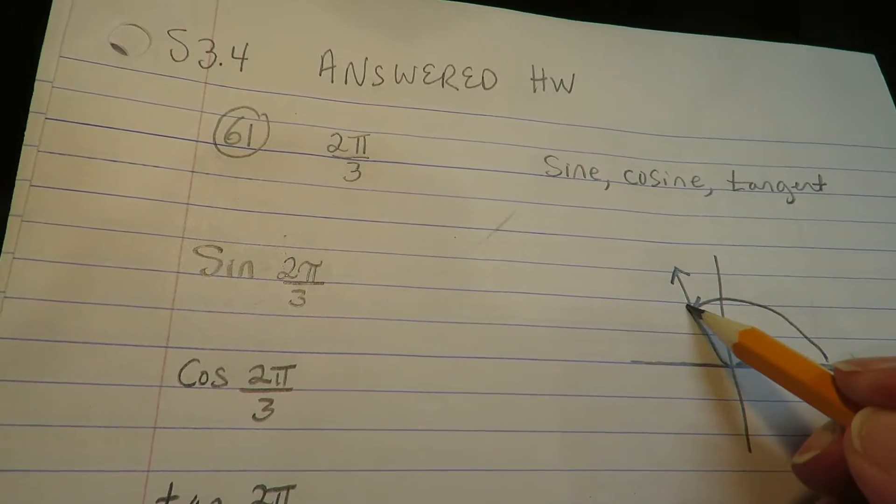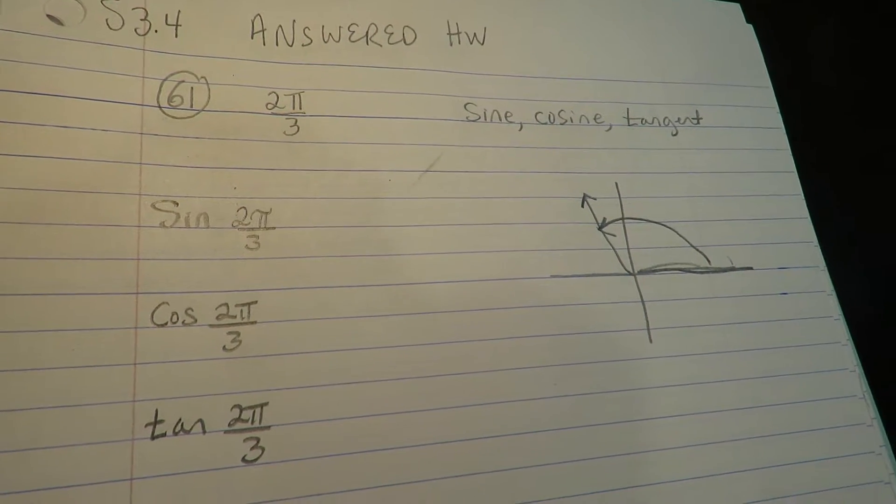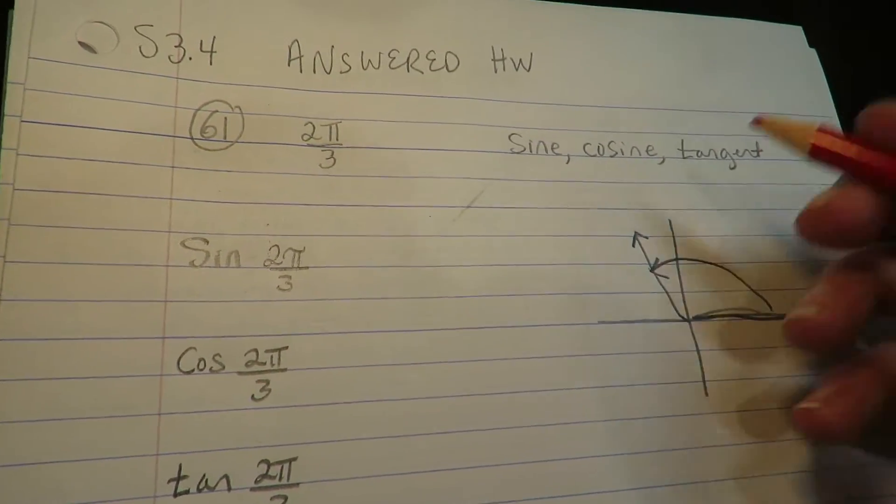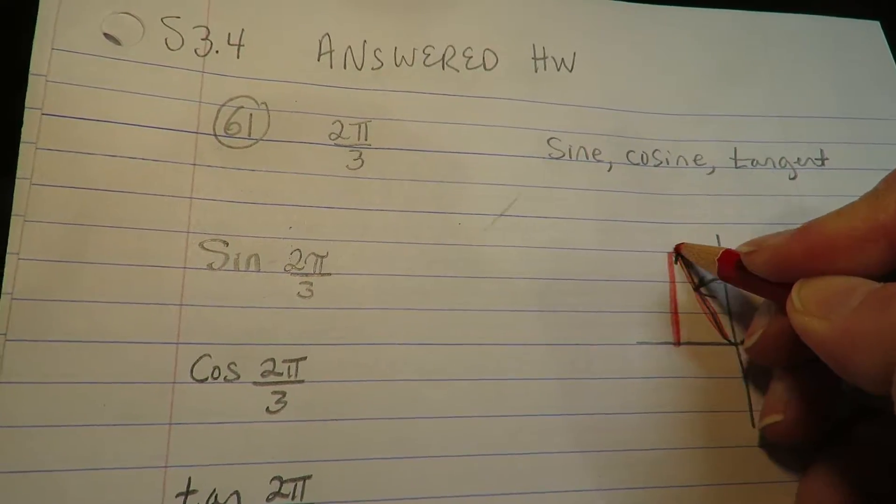Okay, so 2π/3 is about here to here, and the reference angle is always from the terminal side to the horizontal. That's always where it is.